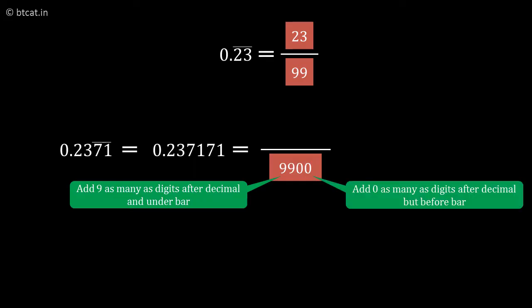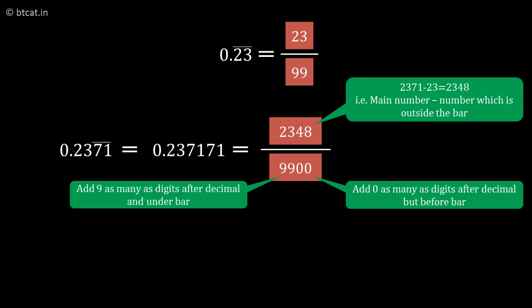For the numerator, we write the entire number 2371 minus the number outside the bar, which is 23. We can reduce to p/q form after cancelling terms in the numerator and denominator. So (2371 - 23)/9900 equals 0.2371 bar.